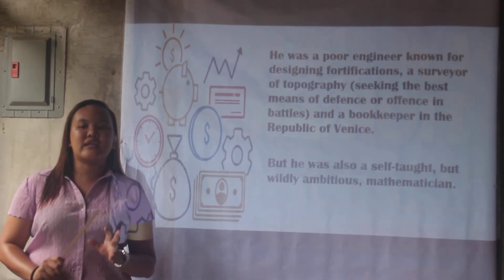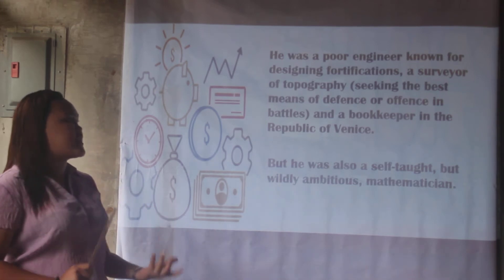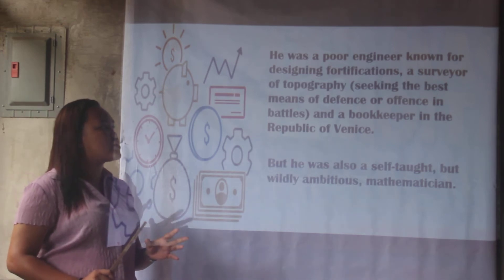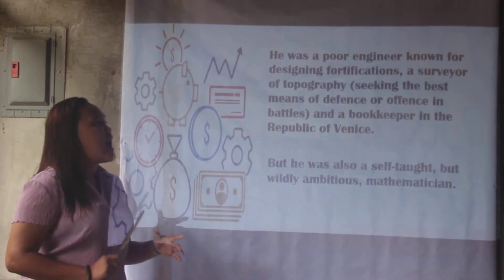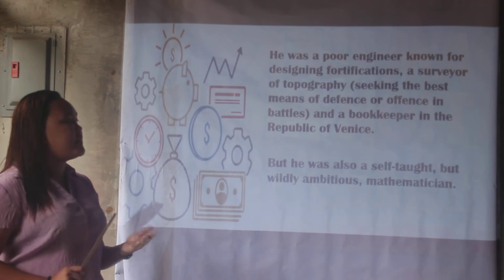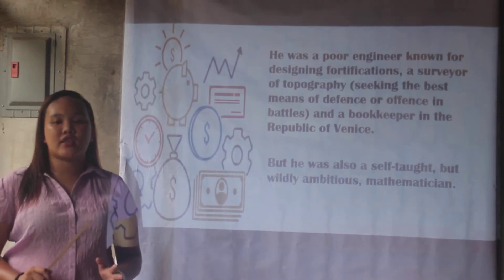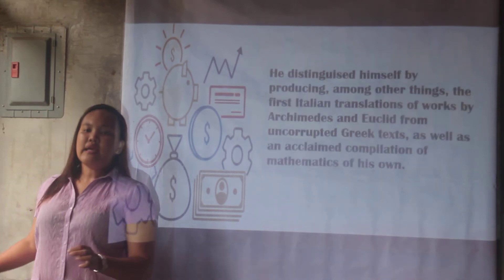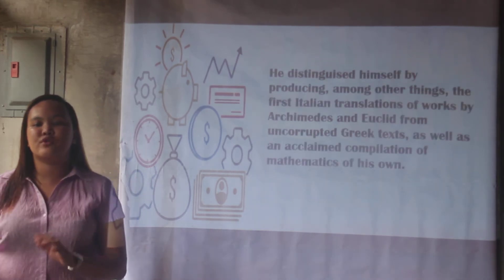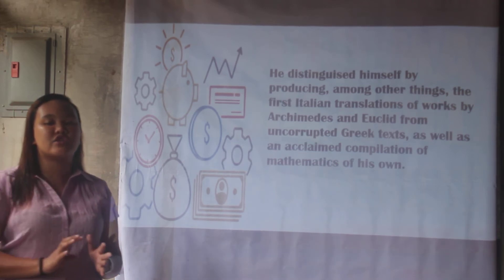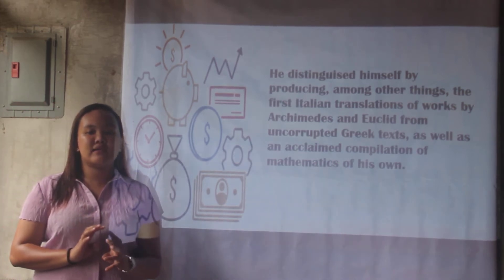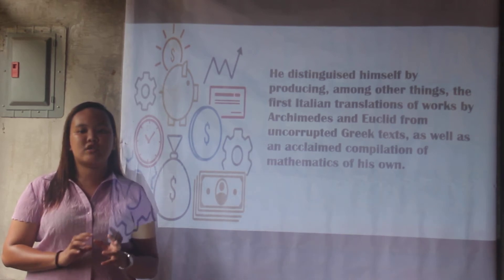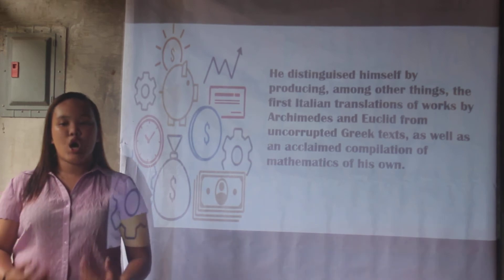He was a poor engineer known for designing fortifications, a surveyor of topography seeking the best means of defense or offense in battles, and a bookkeeper in the Republic of Venice — but he was also a self-taught yet wildly ambitious mathematician. He distinguished himself by producing, among other things, the first Italian translation of works by Archimedes and Euclid from uncorrupted Greek texts, as well as an acclaimed compilation of mathematics of his own.